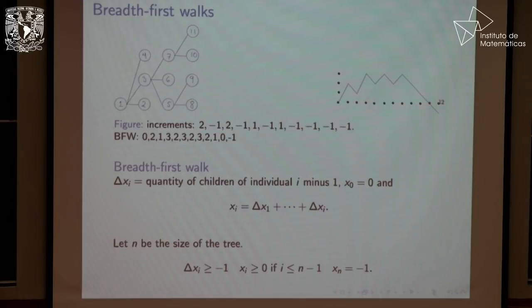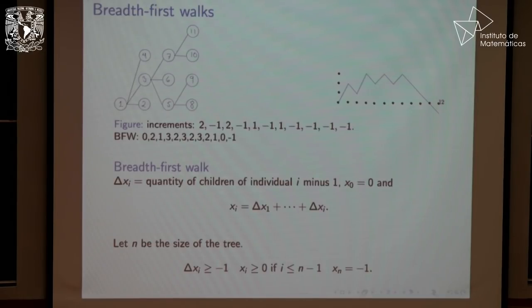These functions are called either Łukasiewicz paths or just breadth-first walks. They satisfy the following: they have jumps of size greater than minus one, they are non-negative until we reach the last value which is equal to minus one. We call these kinds of paths excursions — they start at zero, end at minus one, remaining above zero during the whole trajectory.